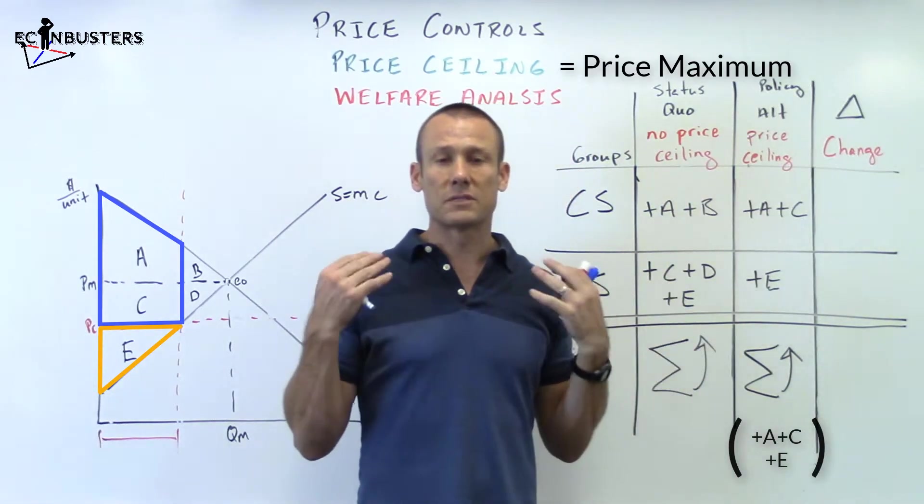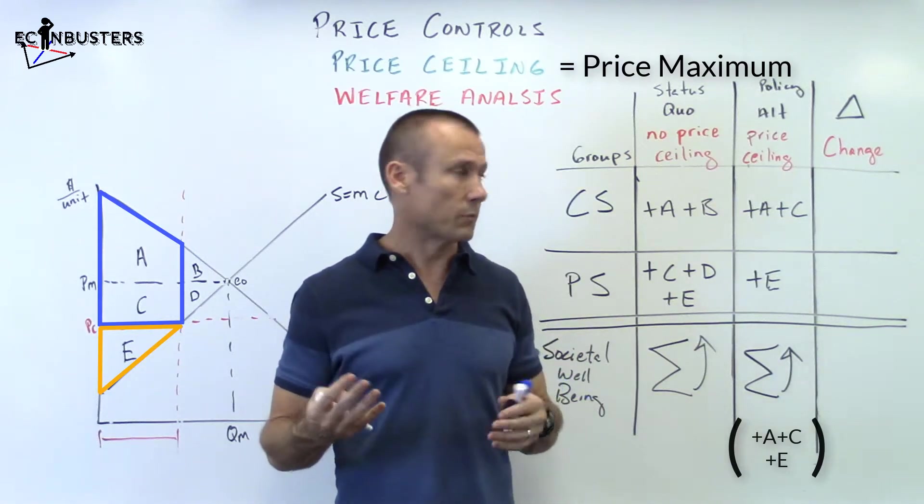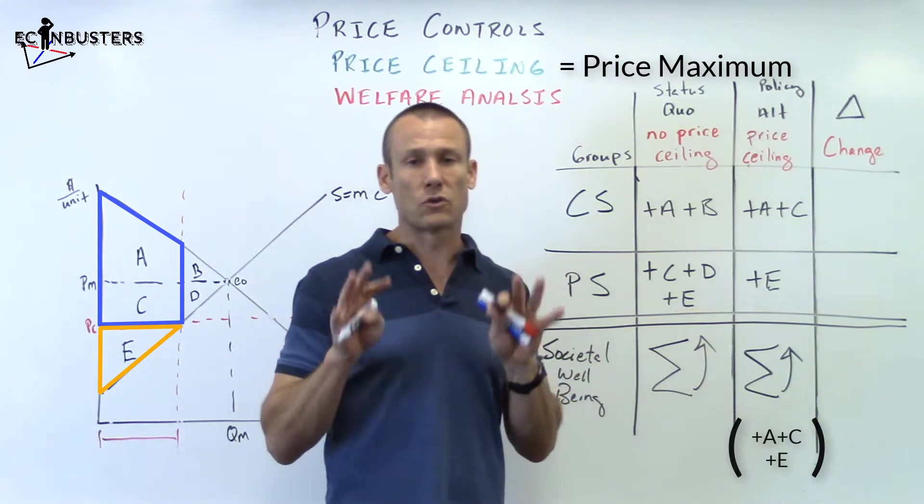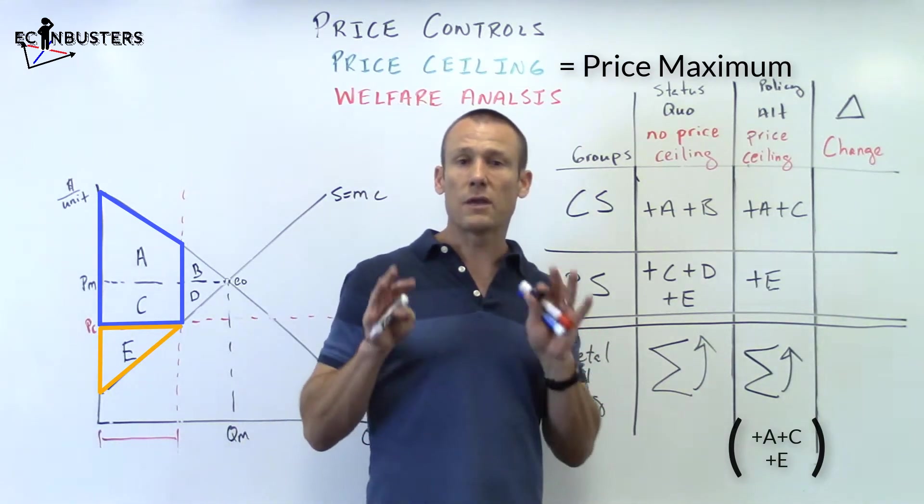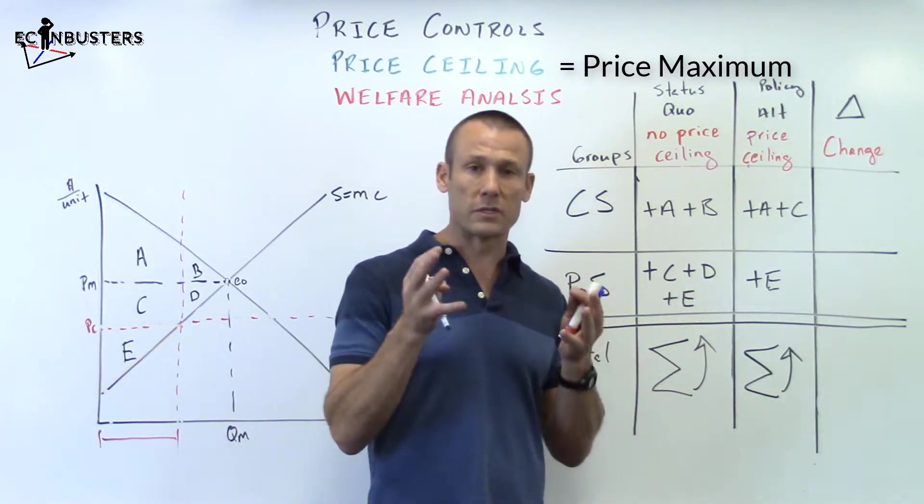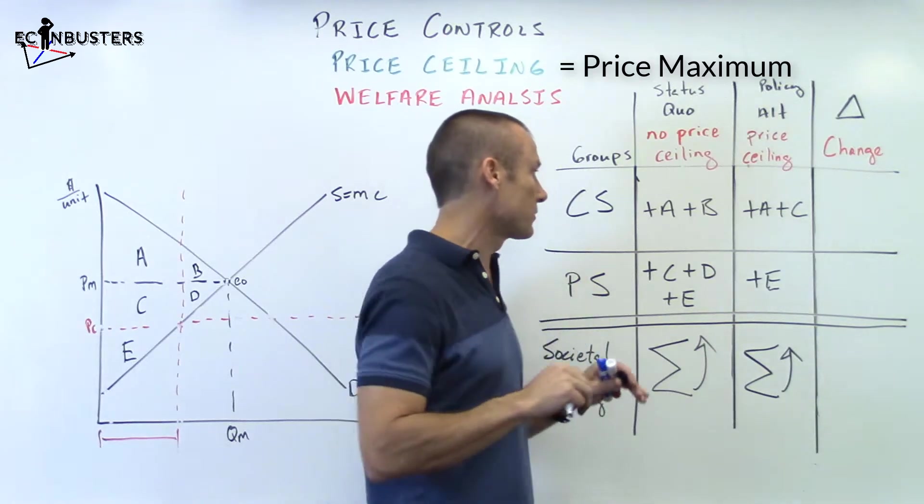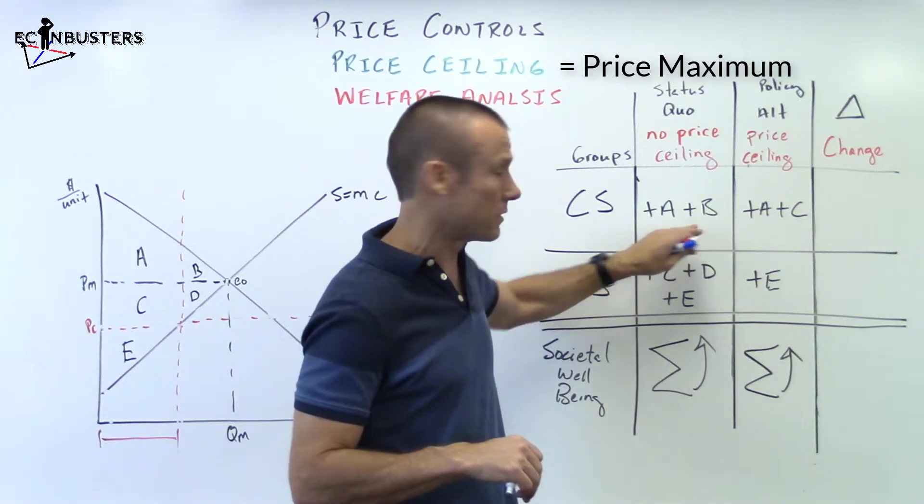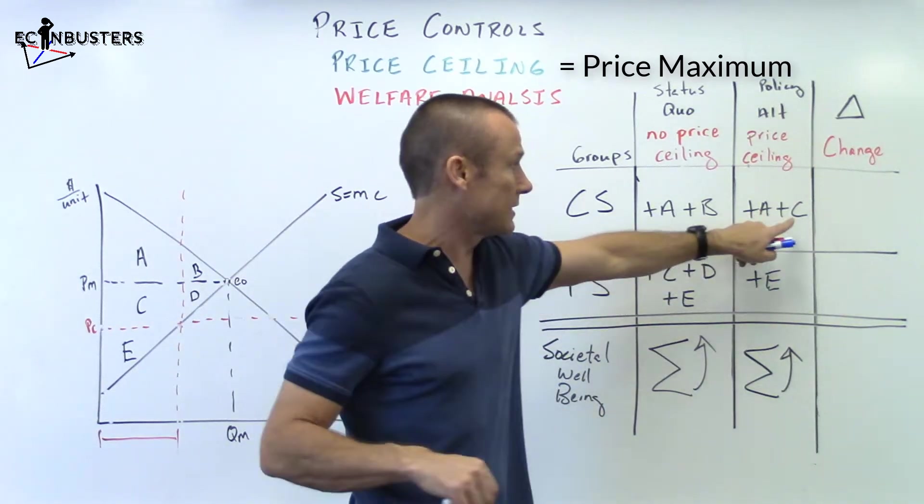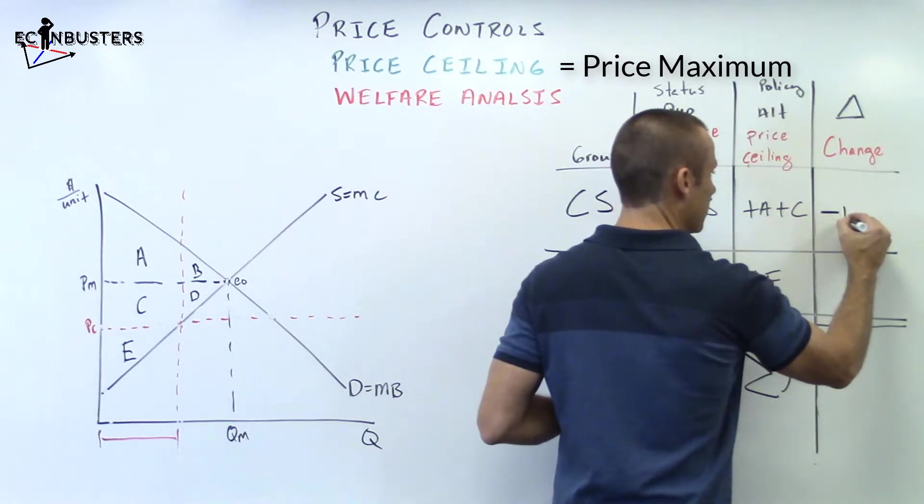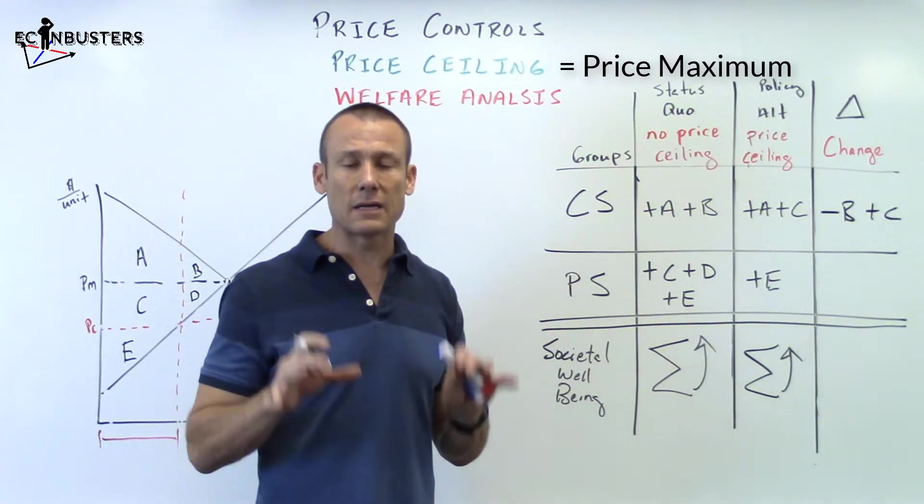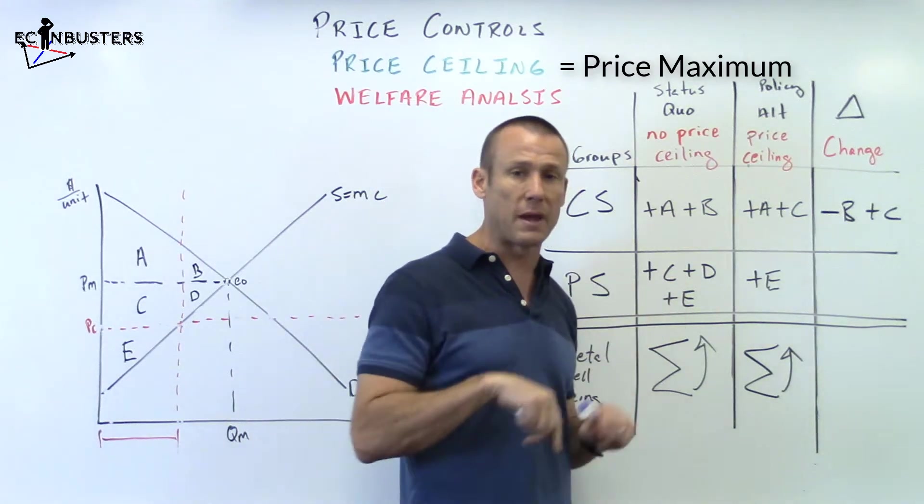Final column. Like I said, oftentimes considered the most important column. Consumer surplus. A lot of times, your professor is going to say, hey, show me the impact on the consumers. Here it comes. Here's the impact on the consumers. They had plus A plus B. Now they have plus A plus C. Hey, they lost B. They lost B, but they gained C. So minus B plus C, that is showing the impact on the consumers.